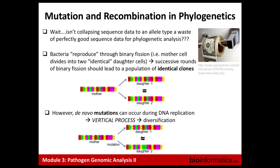Bacteria reproduce such that each of the two daughter cells are ideally identical clones of the parent. Mutations can arise spontaneously — this is a vertical process passing from parent to offspring cells. Each time a new mutation arises we've created a new type that we can compare. But that's not the only way diversity can be introduced; the other is recombination, where DNA comes in from some external source — another cell of the same species, possibly — and is used to replace a locus in the bacterial chromosome.